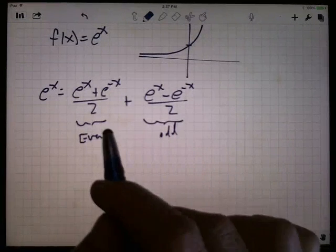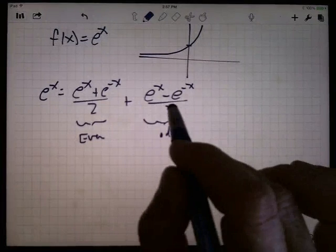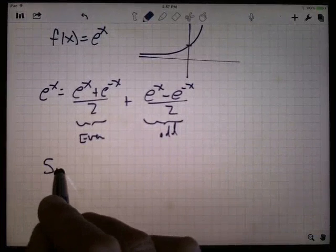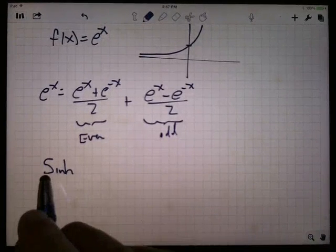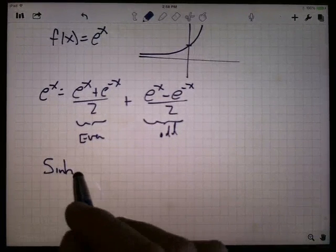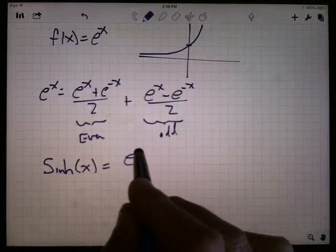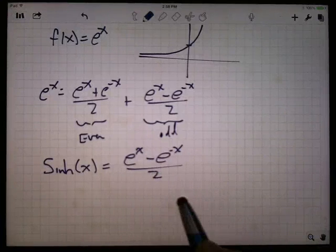What I want to do is I want to take, let's start with the odd part, and give that function by itself a name. And what we're going to call it is we're going to call it the hyperbolic sine. And I write it like sine, but I put an h there. So sinh, usually we say sinch. Anyway, the hyperbolic sine of x is, by definition, the odd part of the exponential function. So e to the x minus e to the minus x over 2.